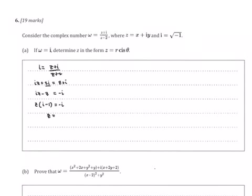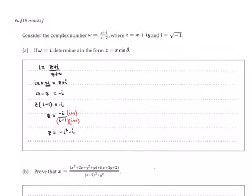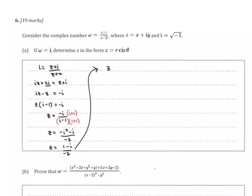I'm going to isolate z by dividing by (i minus 1), and then rationalize the denominator by multiplying by its conjugate. So I get z equals (negative i times the conjugate) over — multiplying by the conjugate gives me negative 2 in the denominator. Negative i squared is positive 1, so z equals (1 minus i) over negative 2, which in a + bi form is negative 1/2 plus i/2.